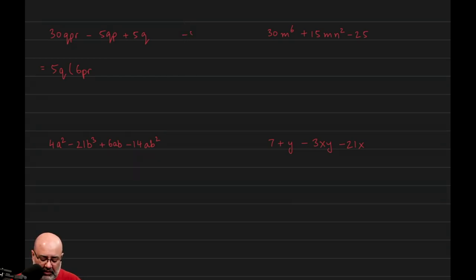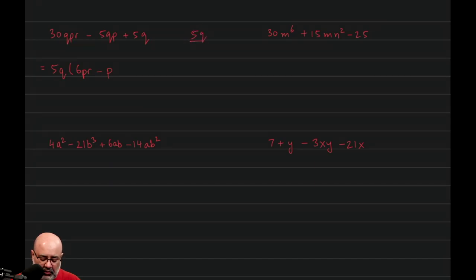Then we divide negative 5QP by 5Q. The 5 will cancel with the 5, and the Q will cancel with the Q, so we're left with negative P. And then finally, we divide 5Q by 5Q. This cancels to give us 1, so plus 1. And that's our answer.